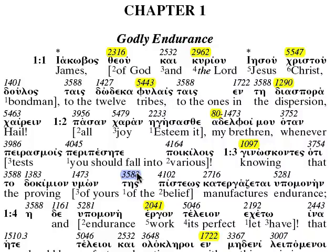Now we're going into the genitive, and the genitive article forms are: 'tou' in the singular for masculine and neuter, 'tis' for the feminine, and 'tōn' — tau, alpha, omega, nu — in the plural for all three genders: masculine, feminine, and neuter. So there are only three forms. The 'tou' being the masculine and neuter genitive — it's the article of possession generally, and sometimes it can be an article with prepositions of separation, like 'apo' and 'para.'